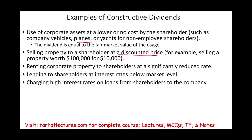Charging a high interest rate on loans from shareholders to the company works the other way: the owners lend money to the company at a high rate. The company gets a deduction, but the owner has income. The owner may find ways to offset that income with other expenses, so they both benefit — and this is where the IRS might intervene.